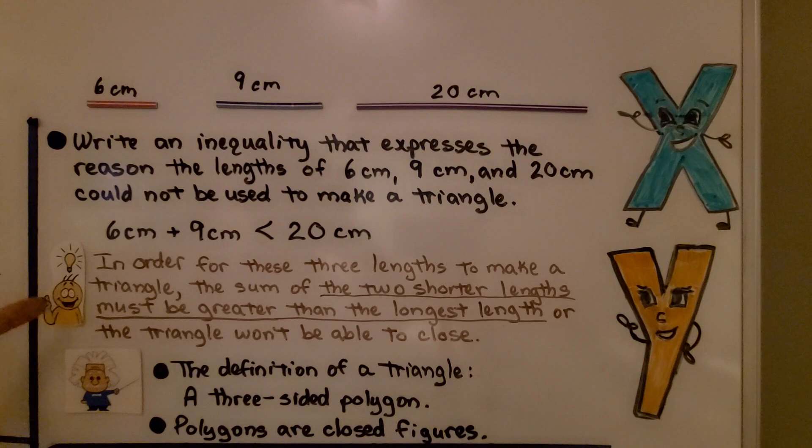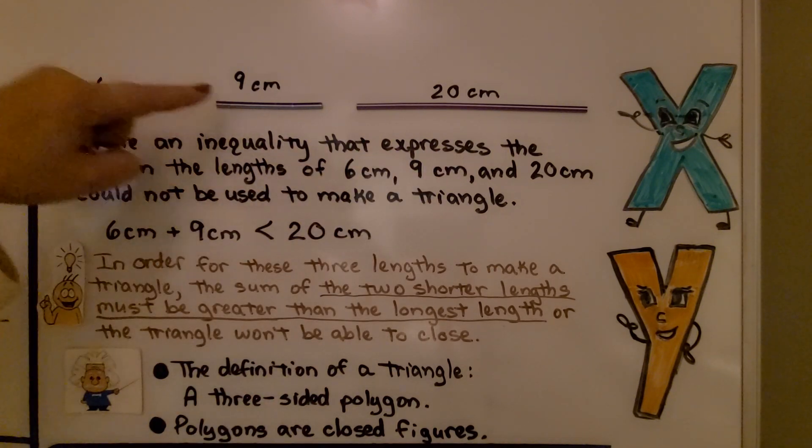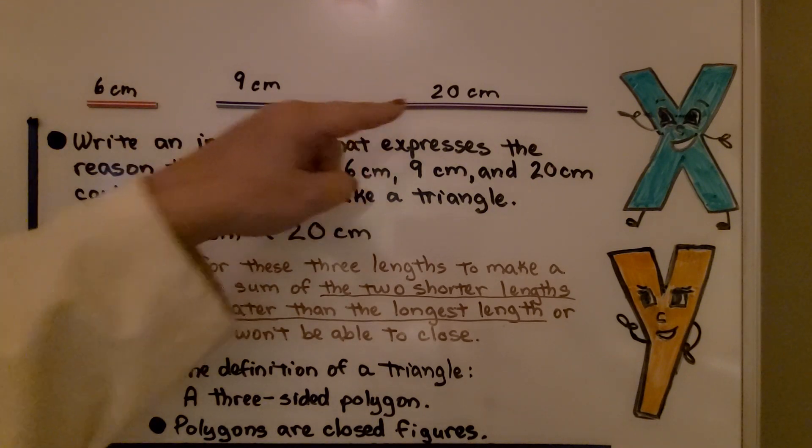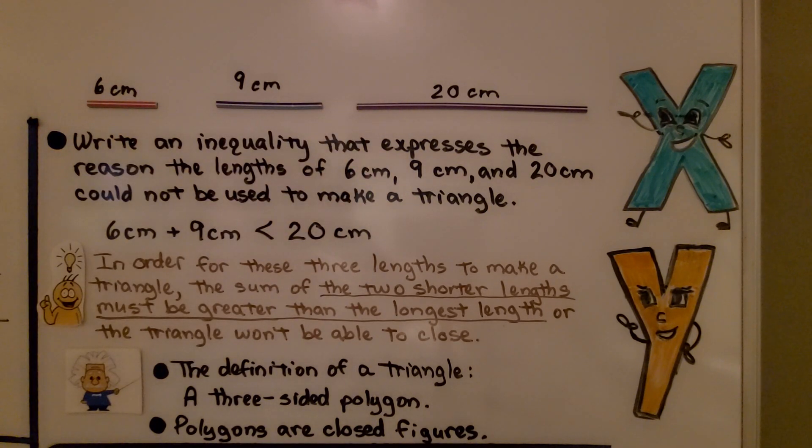See, in order for these three lengths to make a triangle, the sum of the two shorter lengths must be greater than the longest length or the triangle won't be able to close. The definition of a triangle is a three-sided polygon, and polygons are closed figures.